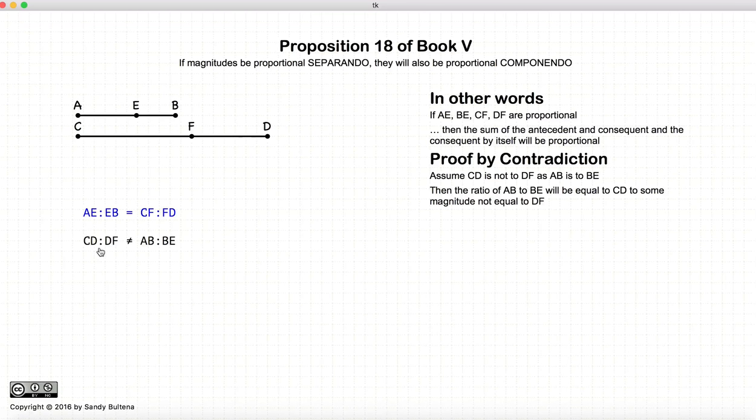We are going to assume that this proposition is not true. So in other words, we are assuming that the ratio CD to DF is not equal to AB to BE. So here is our assumption that the proposition is not true.